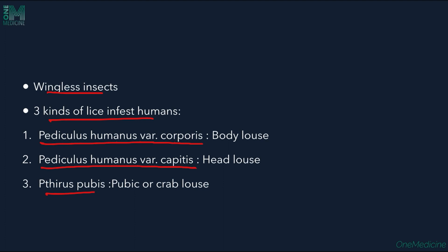Pediculus humanus var. corporis is the body louse, which is the largest. Pediculus humanus var. capitis is the head louse. Phthirus pubis, or the pubic or crab louse, is the smallest louse.